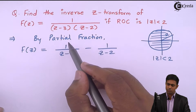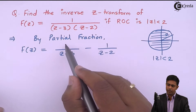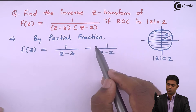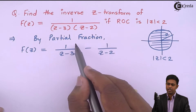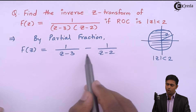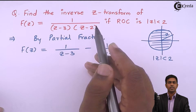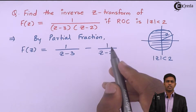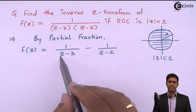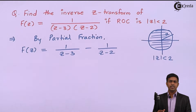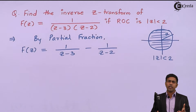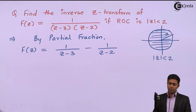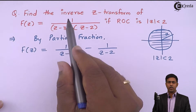You can verify this by cross-multiplication: we get (z-2) − (z-3), the z terms cancel, and 3 minus 2 = 1, with denominator (z-3)(z-2). If you are not comfortable with this direct method, you can perform partial fractions using A/(z-3) + B/(z-2), solve for A and B, and you will get the same answer.